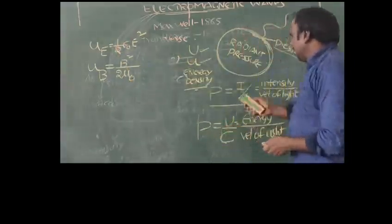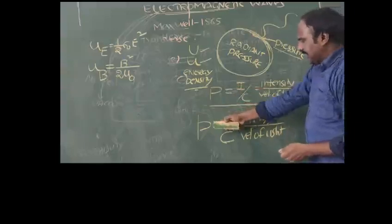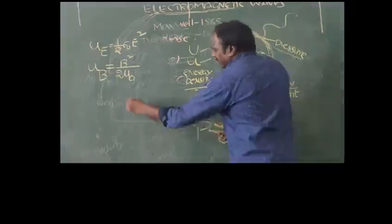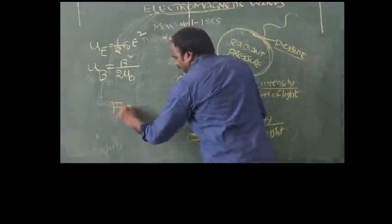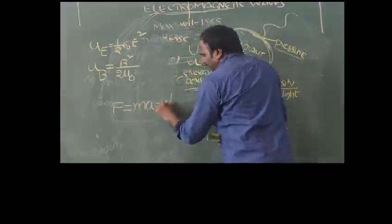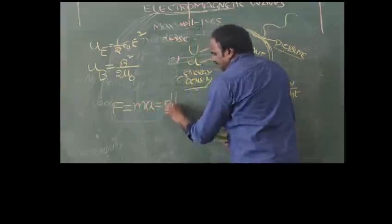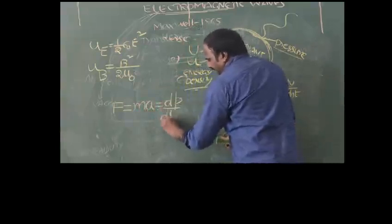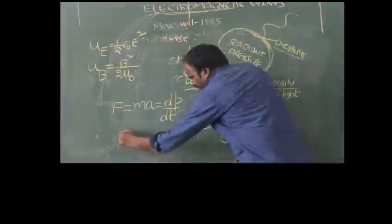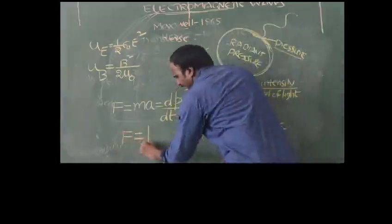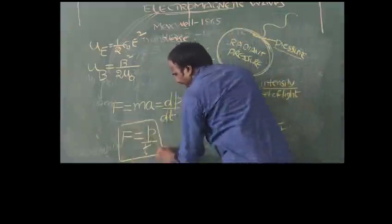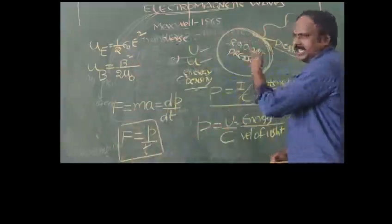Along with momentum, electromagnetic waves also exert force. This force can be calculated using Newton's second law: F = ma, which we write as F = dp/dt, where p is momentum. So force is simply F = dp/dt. These formulas help a lot in solving problems related to electromagnetic waves.